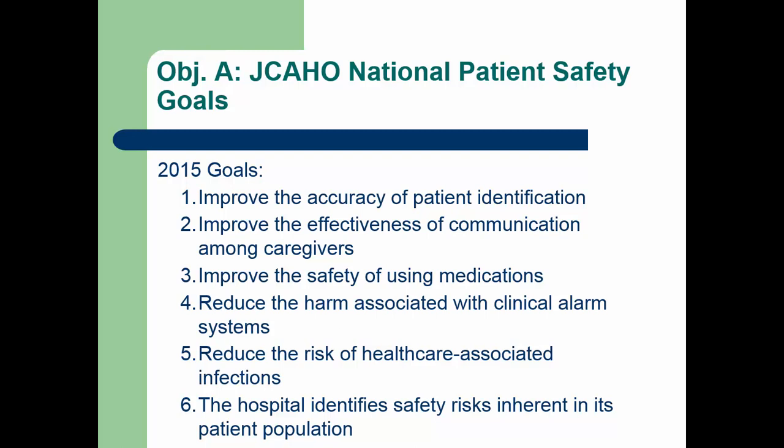For example, the first goal — which is improve accuracy of patient identification — the organization might require a photo ID in each patient's chart in addition to armband identification. There's more information in your Craven text, so be sure to view this as well as the handout in E360 that talks about national patient safety goals.